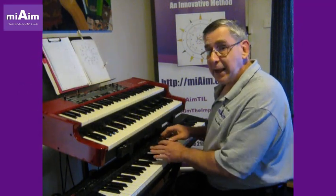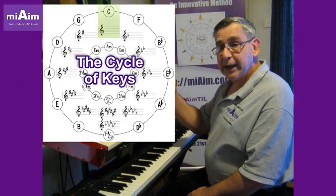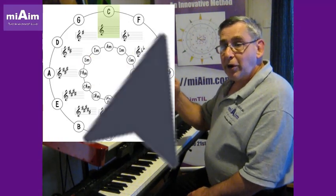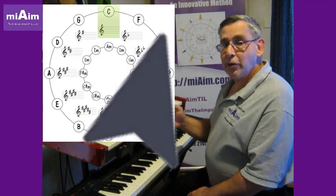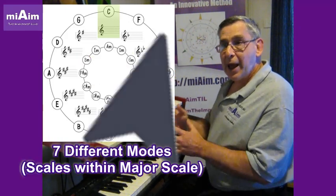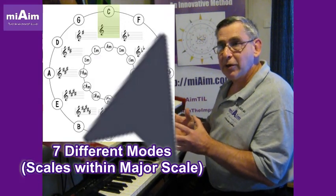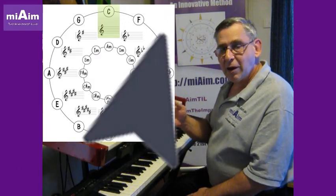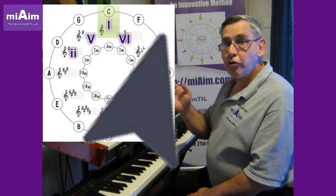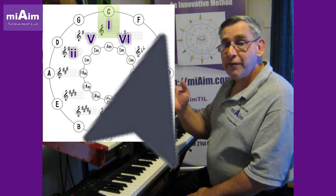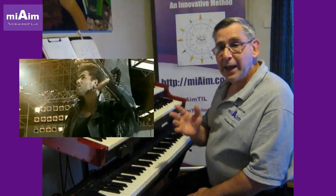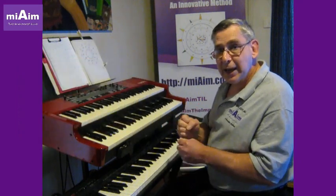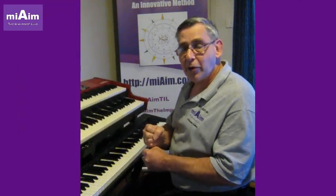If we base it on the key of C as seen here in the cycle of keys, we'll use all the white notes on the keyboard and we'll play the seven different modes and have a look at the most common chord progression as found on the cycle of keys: one, four, two, five. And we'll hear how those triads and tetrachords really change when playing in a different mode.